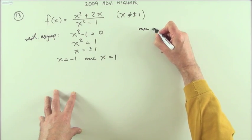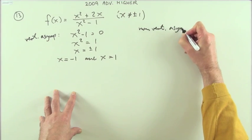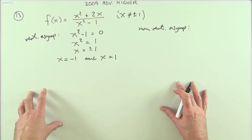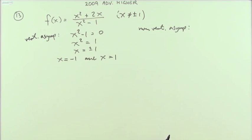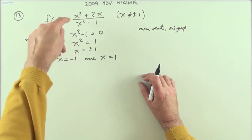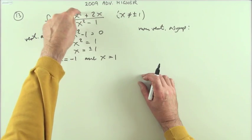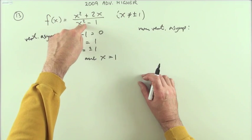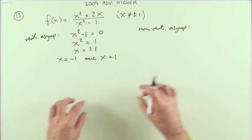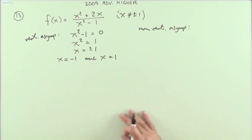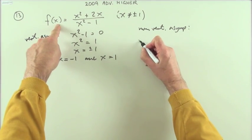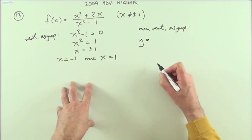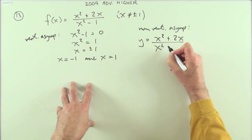Now the non-vertical asymptotes would require you to find out what happens to this expression as you go off to infinity. Does it level off to a certain value? And it will. If the degrees of the numerator and denominator, these powers here, if these powers are the same, or if the bottom power is higher, then it's going to go to a horizontal asymptote.